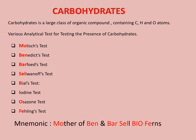At the bottom of the screen I have given a mnemonic: 'Mother of pen and bar sell bio ferns.' If you repeat this mnemonic two to three times, you can clearly memorize all the given tests. Here, 'Mo' stands for Molisch test, 'Ben' for Benedict's test, 'Bar' for Barfoed's test, 'Cell' for Seliwanoff's test, 'Bio' for Bial's, iodine, and osazone tests, and 'Ferns' stands for Fehling's test.